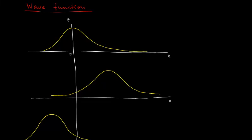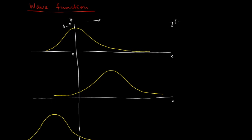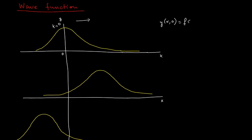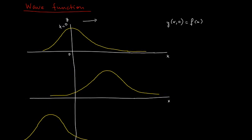Consider a pulse that travels to the right with velocity v, and at time equals zero, it has a shape shown in this yellow diagram. At time equals zero, the shape of this pulse can be represented by some mathematical function y(x, 0) = f(x). This function describes the transverse position y of a point P, which has some x position xp, and the function describes its transverse position yp.